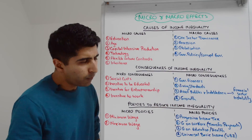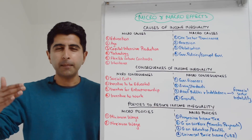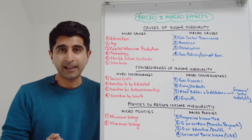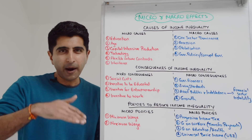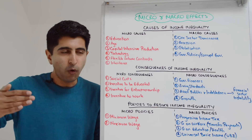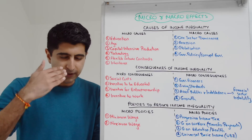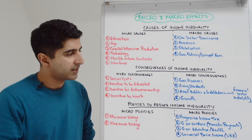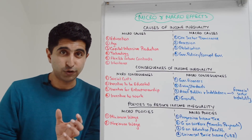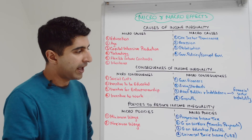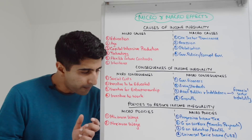Very high income inequality can also act as a constraint to growth. Those with high incomes tend to have a high marginal propensity to save, while those with lower incomes have a high marginal propensity to consume. By not seeing the same rate of income growth, lower-income groups have restricted purchasing power, limiting consumption, aggregate demand, and growth. Those on low incomes who struggle to access health and education also constrain potential growth and increases in LRAS.